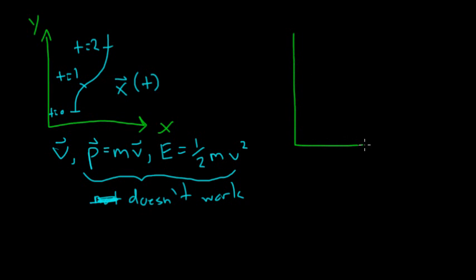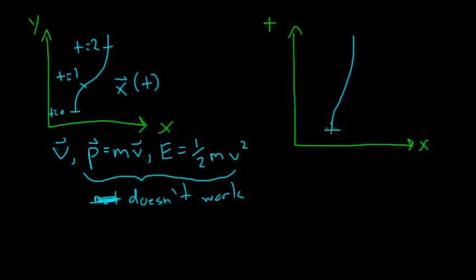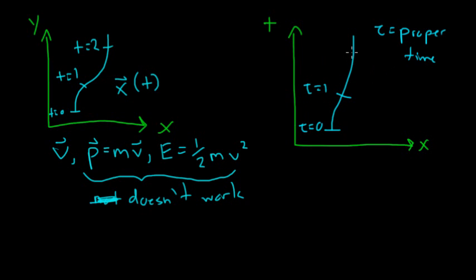Let's look at the special relativity case. We have an x-axis and a t-axis, and we want to describe a particle's trajectory. Instead of using coordinate time t, we use what's known as the proper time of this particle — denoted tau. If I attach a clock to this particle and it moves around, it undergoes time dilation, but all observers can agree on where in space-time it is. We use proper time to give t as a function of tau and x as a function of tau.